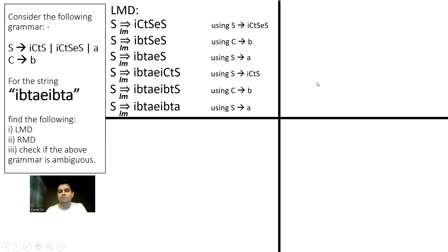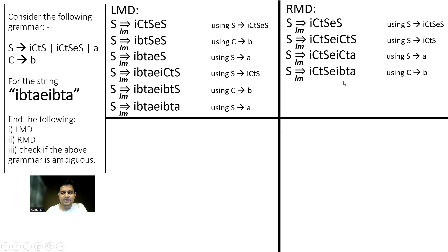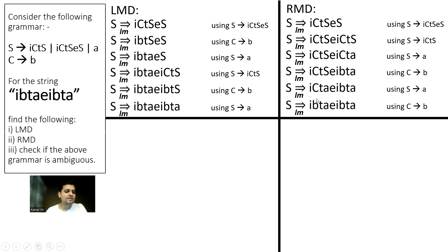Now we will perform the RMD. We have to start with ICTS E S. Then the rightmost non-terminal is replaced with ICTS. Then S is replaced with A, then C is replaced with B, then S is replaced with A, then C is replaced with B. So the first part and second part are complete.